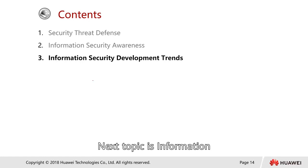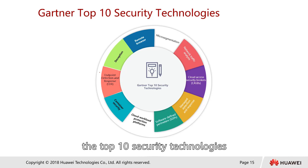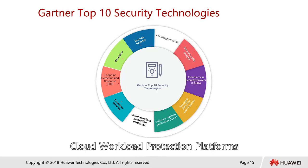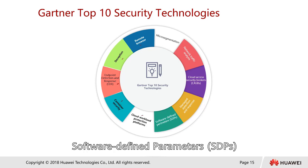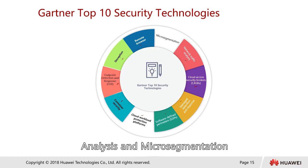The next topic is information security development trends. Let's look at Gartner's top 10 security technologies. Gartner came up with the top 10 security technologies, which includes remote browser, deception, endpoint detection and response, container security, cloud workload protection platforms, software defined parameters, managed detection and response, cloud access security brokers, network traffic analysis, and micro segmentation.